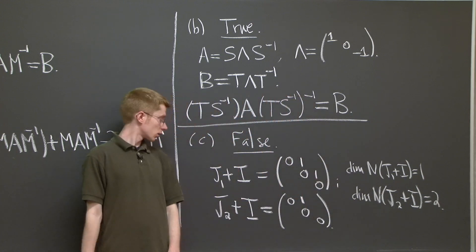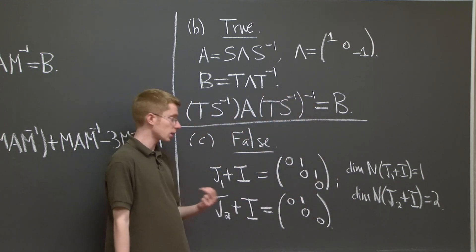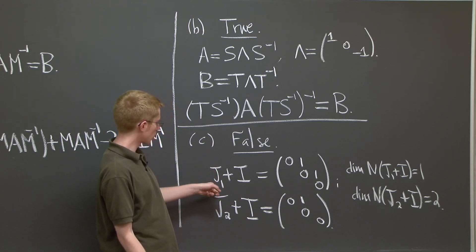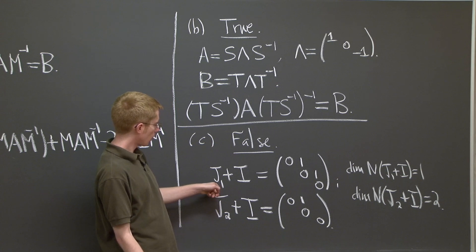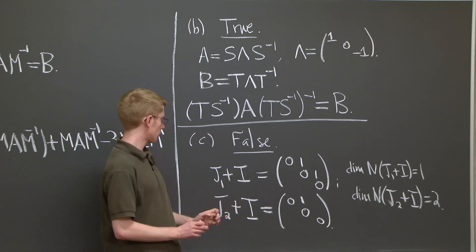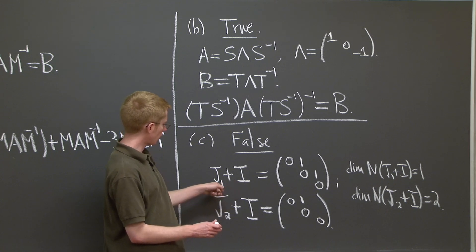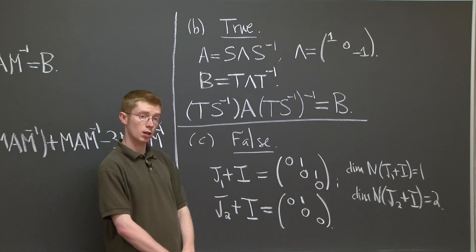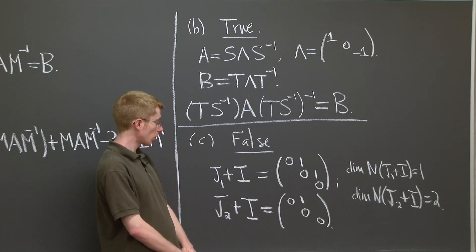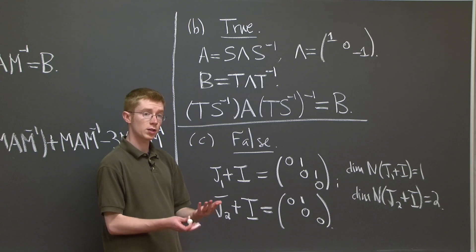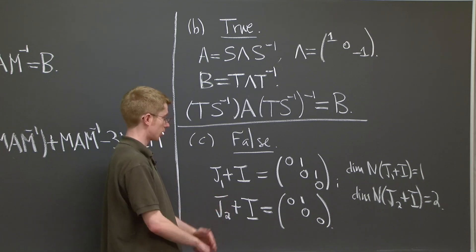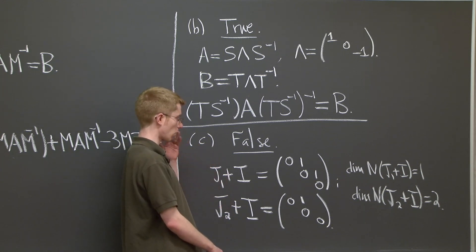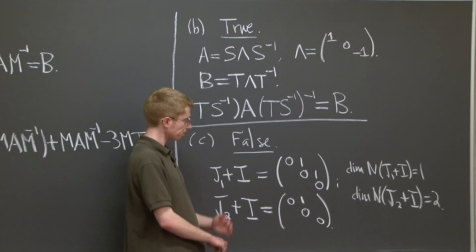So that completes the problem. It's a nice exercise to do this more generally. And you can use these techniques, not just looking at the number of independent eigenvectors and the null space of your J matrix, your J minus lambda I matrix, but also powers of J minus lambda I and their null spaces. You can use this to show that any two matrices in Jordan Normal form that are different are not similar. The same method works.